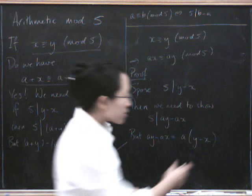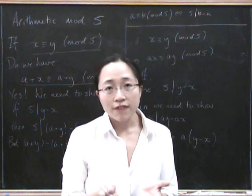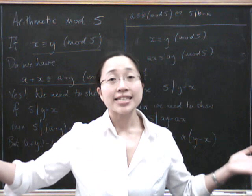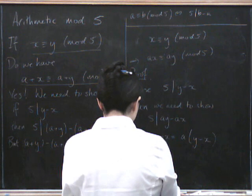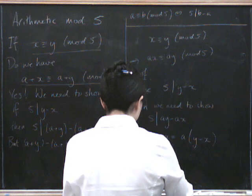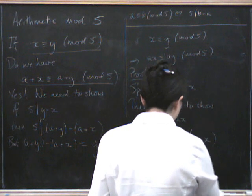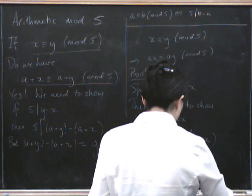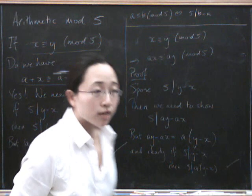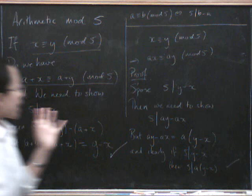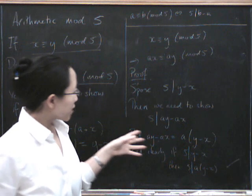Because another way of putting this is that y minus x is a multiple of 5. Now, if you take a multiple of 5 and multiply it by something, it's clearly still going to be a multiple of 5. So, clearly, if 5 divides y minus x, then 5 divides a times y minus x. So we're done. So we can certainly add the same thing to both sides and we can multiply both sides by the same thing.